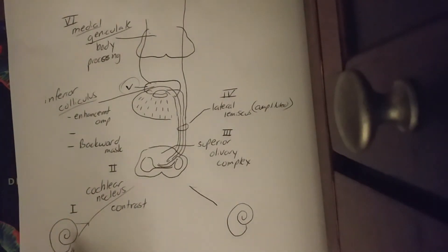When the sound passes through the cochlea and it goes to the auditory nerve, that's wave one. From wave one, I will reach the cochlear nucleus, which is wave two. And this helps with contrast of sound.